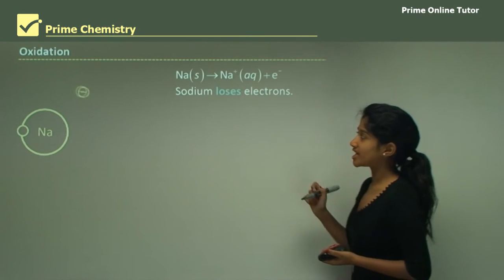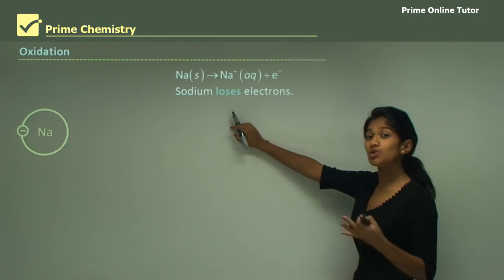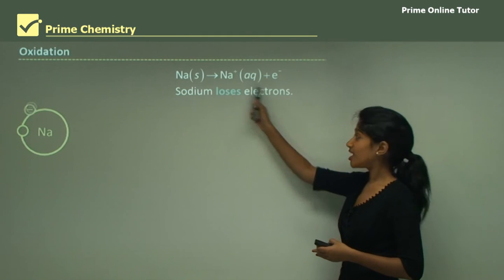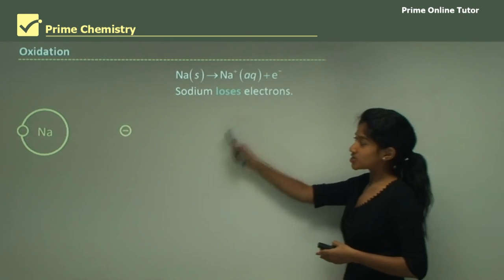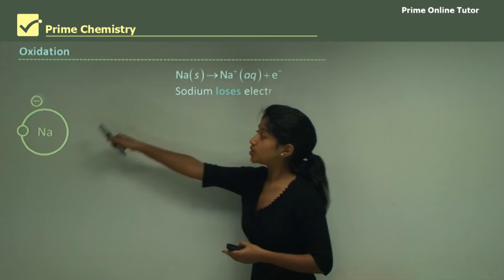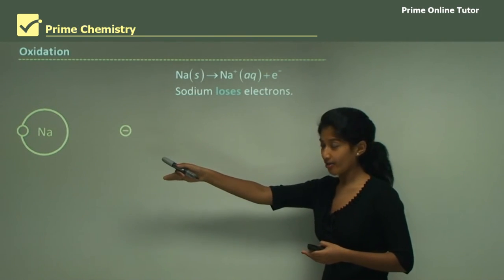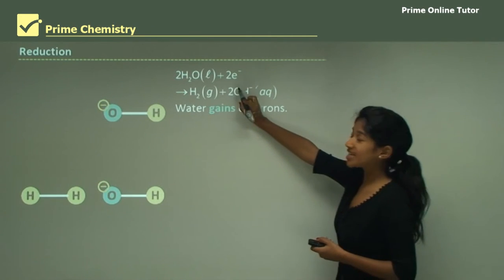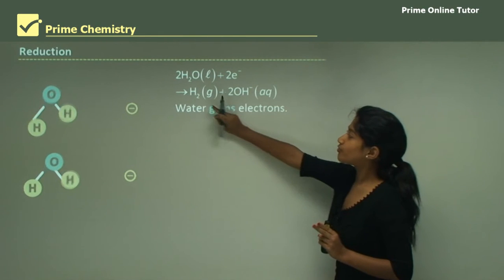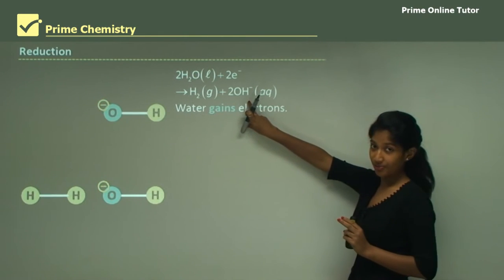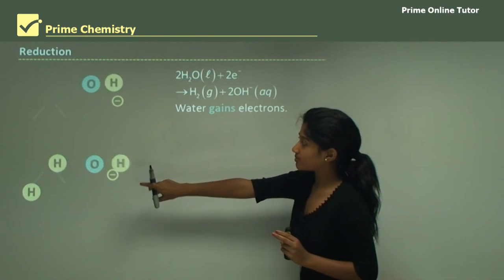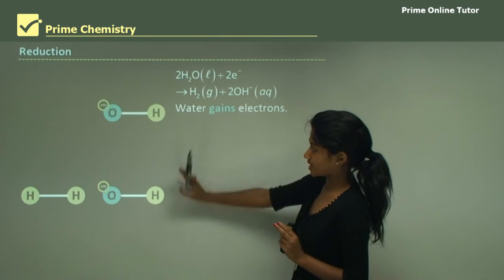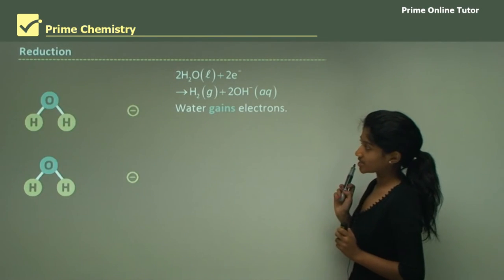In the oxidation part, sodium loses an electron to form a sodium ion — as you can see in the animation, sodium loses its electron to form a sodium ion. In the reduction reaction, the water molecule gains two electrons to form hydrogen gas and a hydroxide ion. As you can see in the animation, water splits to form hydrogen and two hydroxide ions.